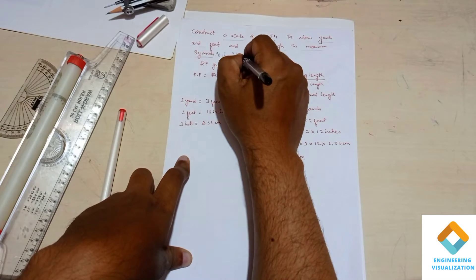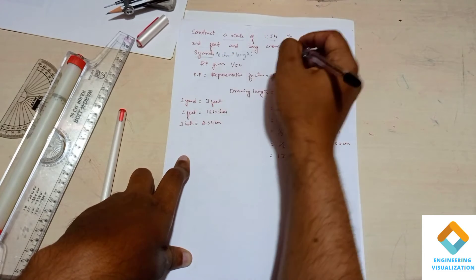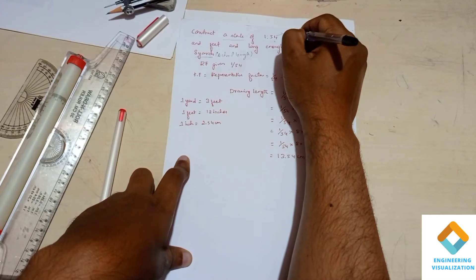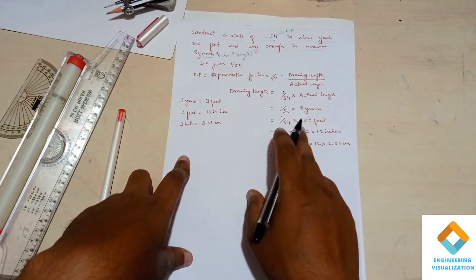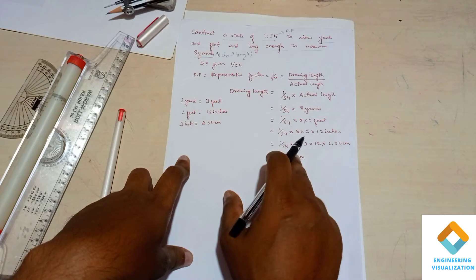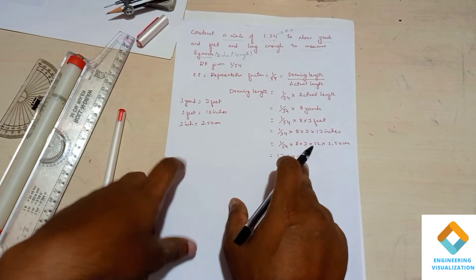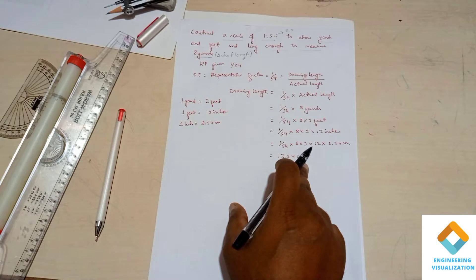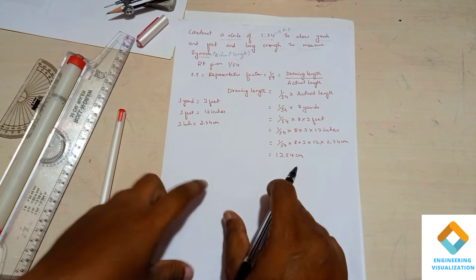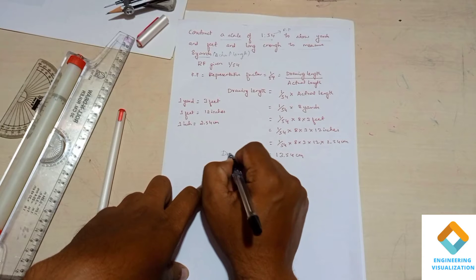Here given in the question, 8 yards is equal to actual length and 1:54 is the RF. Using the formula, substituting all the values and doing the calculation, so finally we got the value of 13.54 centimeter as the actual length. This is the length we need to draw using scale.